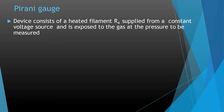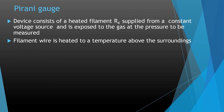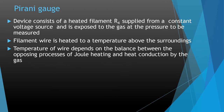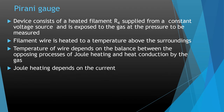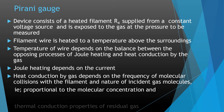The device consists of a heated filament R4 supplied from a constant voltage source, exposed to the gas at the pressure to be measured. The filament wire is heated to a temperature above its surroundings. The temperature of the wire depends on the balance between the opposing processes of Joule heating and heat conduction by the gas. Joule heating depends on the current, while heat conduction by the gas depends on the pressure, frequency of molecular collisions with the filament, and the nature of the gas molecules — proportional to the molecular concentration and thermal conductivity of the residual gas.